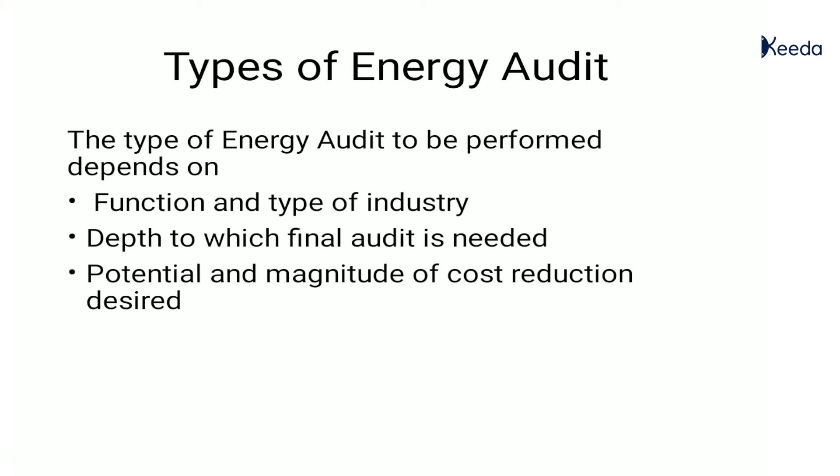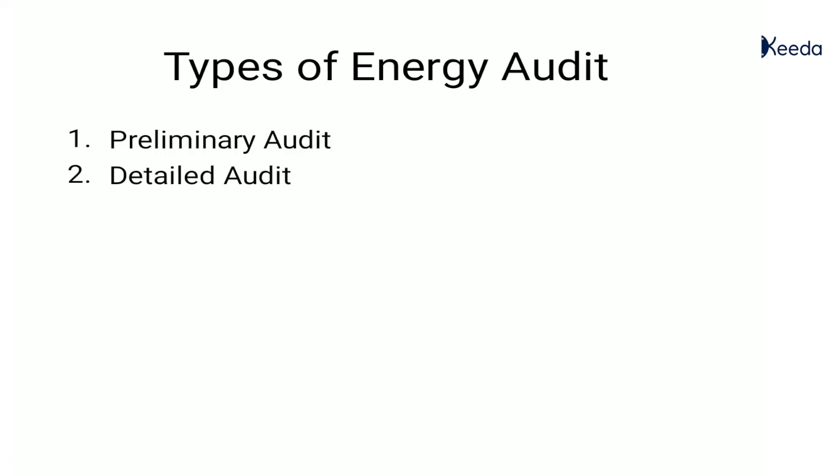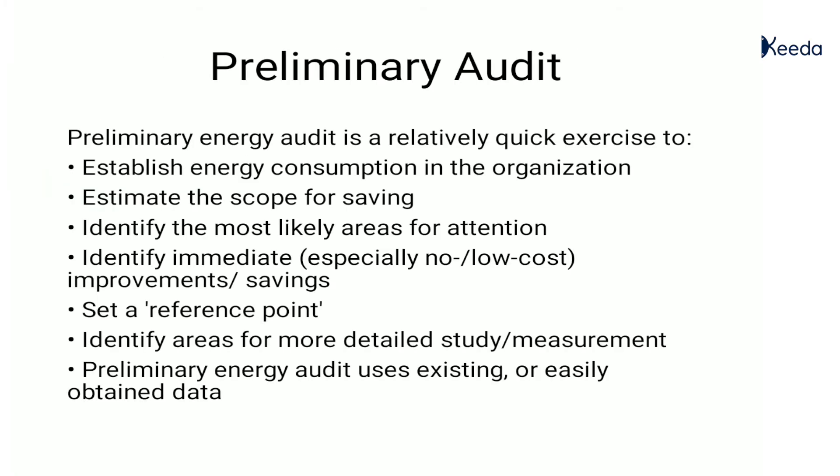The next type of audit is the detailed audit. As the name implies, it will be in detail. This type of audit offers the most accurate estimate of energy saving and cost. This audit is carried out in three phases: phase one is the pre-audit phase, phase two is the audit phase, and phase three is the post-audit phase. Let us see these phases one by one.